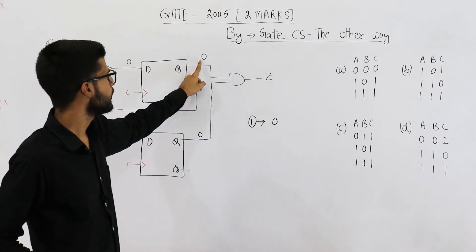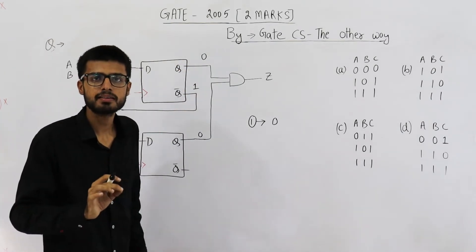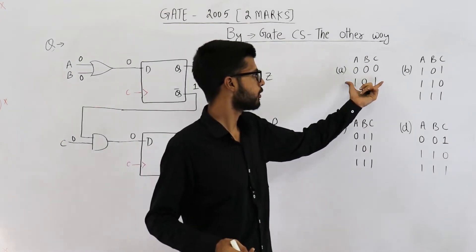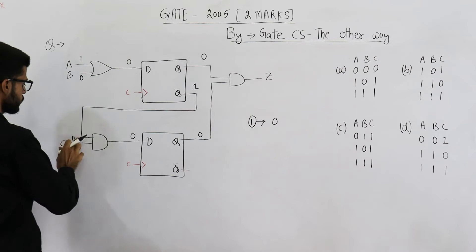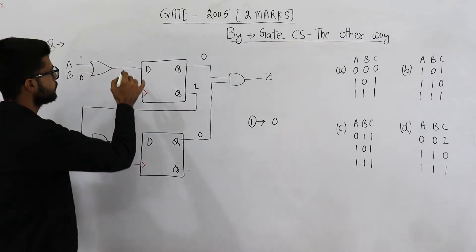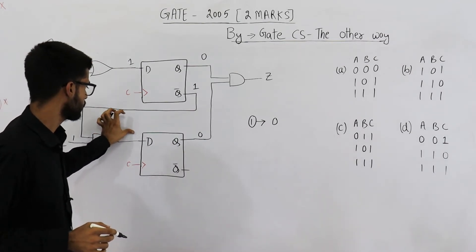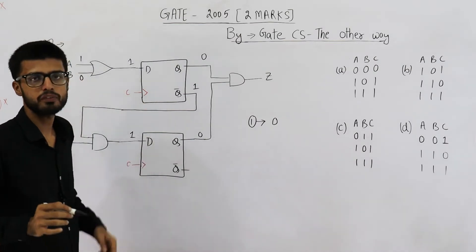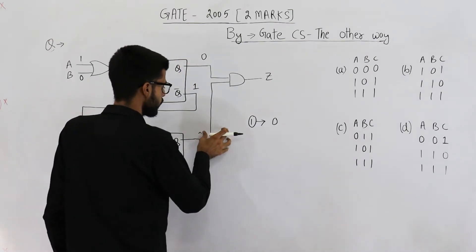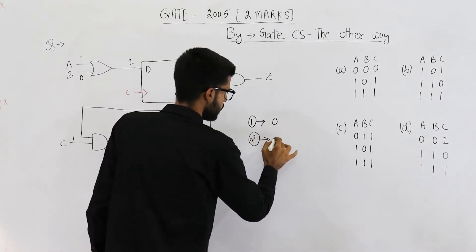Keep in mind Q is 0 and Q_bar will be 1 because complement of 0 is 1. These values remain as-is until the next clock, since flip-flops react only when a clock is given. Now we change the input: A becomes 1, B is 0, C is 1. The output of the OR gate becomes 1, and since 1 AND 1 is 1, the output of the AND gate is 1. That means the input of both flip-flops is 1. When the second clock is given, this 1 is shifted into both flip-flops. The output Z is now 1 — 1 AND 1 is 1. So after the second clock, the output becomes 1.